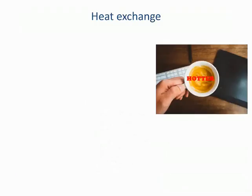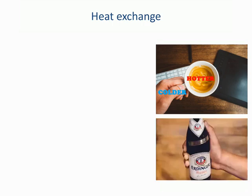If you put a hotter object next to a colder object, you will observe that energy flows from the hotter object to the colder object. For example, if you're holding a cup of hot coffee in your hand, energy will flow from the coffee to your hand, and if you're holding a bottle of cold beer, energy will flow from your hand to the beer.